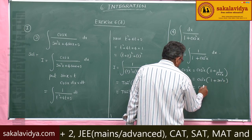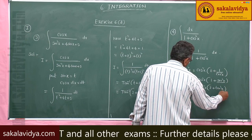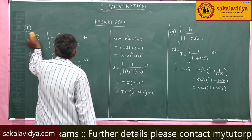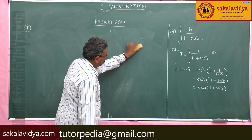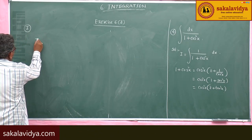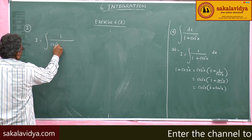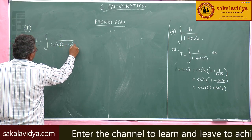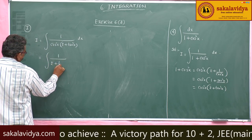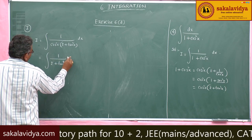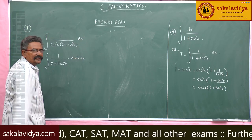Since secant squared x equals 1 plus tan squared x, the denominator becomes cos squared x into 2 plus tan squared x. So I becomes integral 1 by cos squared x into 2 plus tan squared x dx. Now 1 by cos squared x is secant squared x, giving integral 1 by 2 plus tan squared x into secant squared x dx.